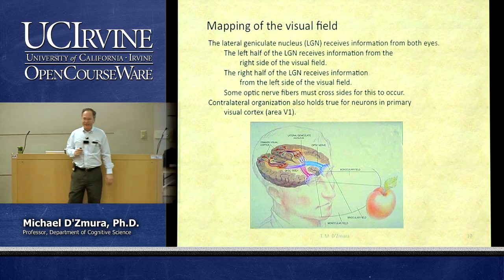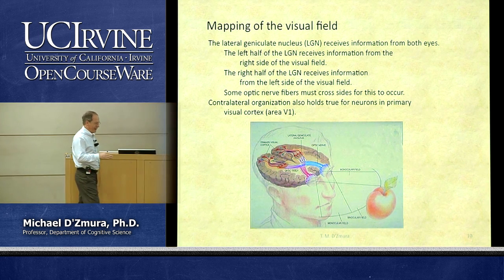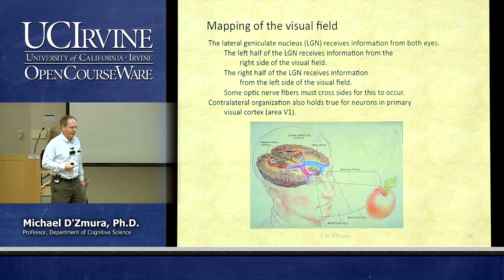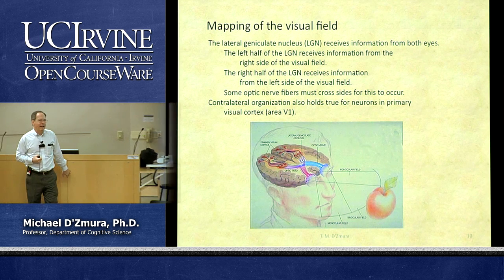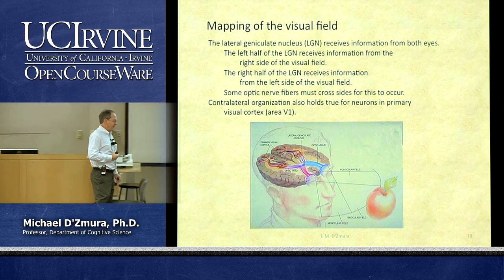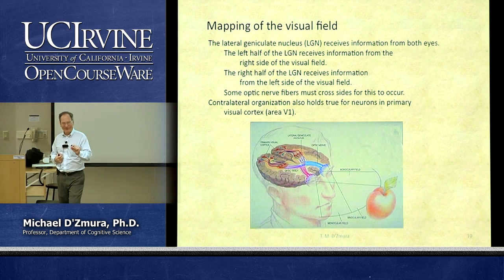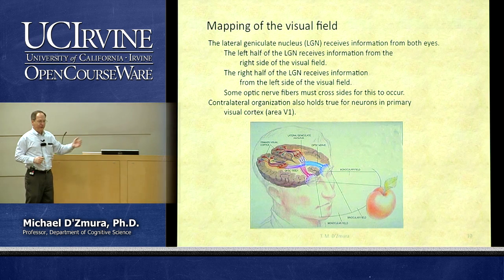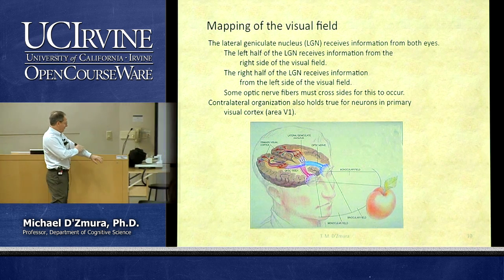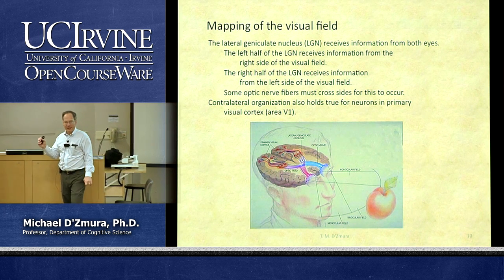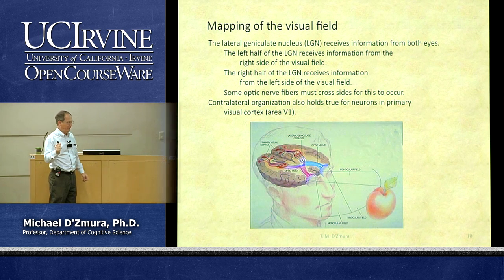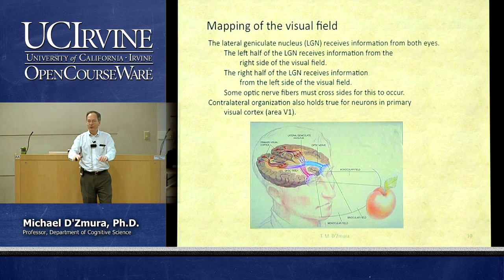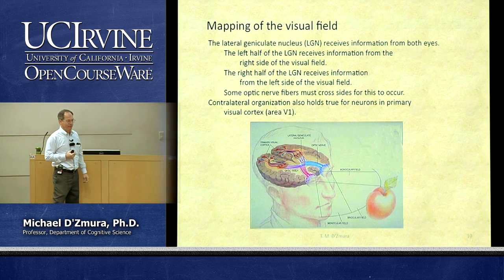There are some retinal ganglion cells that send their axons to other locations. For example, some send axons to the superior colliculus in the midbrain. Others send axons to brain areas associated with circadian rhythms, and some of these cells do not have standard rod or cone sensitivities. They are more like melanin — a brown skin pigment — and a small number signal the absolute amount of light, conveying whether it is nighttime or daytime.